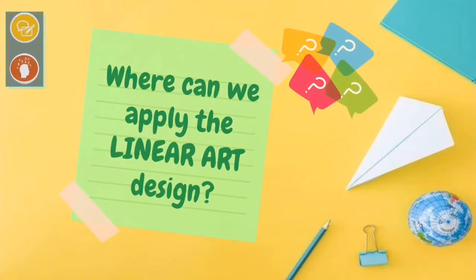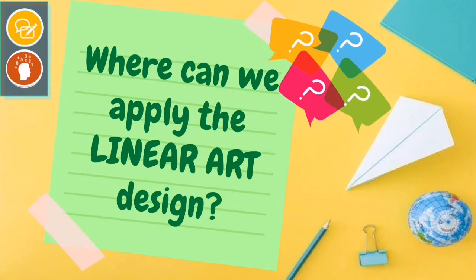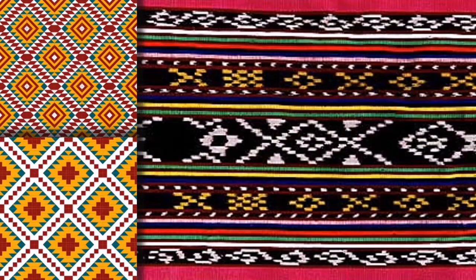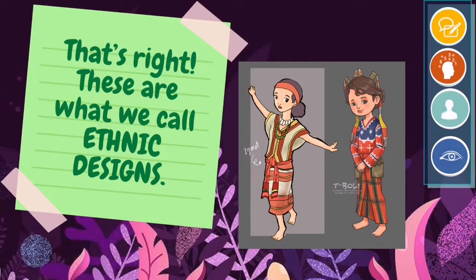Where do you think we can apply Linear Art Design? Here are some examples of Linear Composition. Are you familiar with these? What do we call this kind of design? Where do we usually see this kind of patterns or design? These are what we call Ethnic Designs. Our cultural groups use Linear Composition Designs, which they call Ethnic Designs. These designs can be found on their attire.